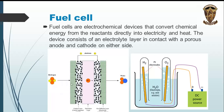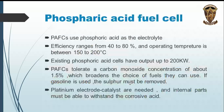On the anode side, hydrogen is provided which, in the presence of a catalyst, decomposes into hydrogen ions and electrons. The electrons pass through the external circuit while hydrogen ions pass through the electrolyte to reach the cathode. On the cathode side, oxygen is provided and combines with the hydrogen ions and electrons to form water.